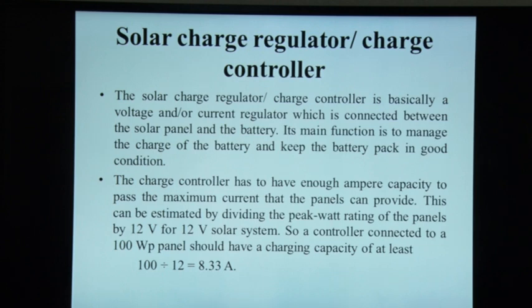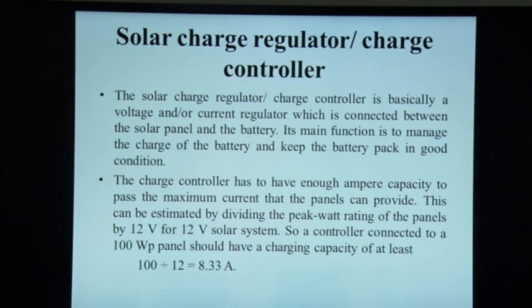The solar charge regulator or charge controller is a voltage or current regulator connected between the solar panel and the battery. Its main function is to maintain the battery charge and keep the battery in good condition. The charge controller must have enough ampere-hour capacity to pass the maximum current the panel can provide. This is estimated by dividing the peak watt rating of the panel by 12V for a 12V solar system. For example, a controller connected to a 100-watt panel should have a charging capacity of at least 100/12 = 8.33 amperes.